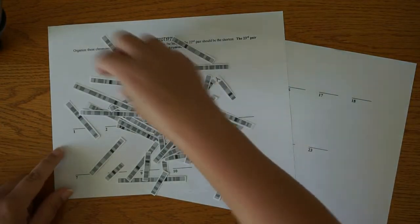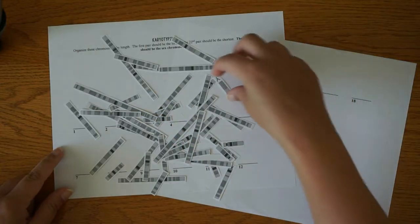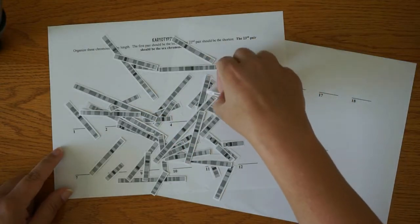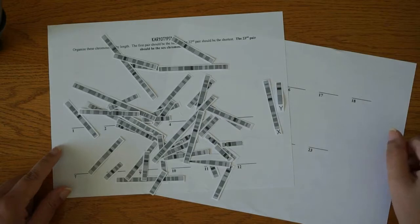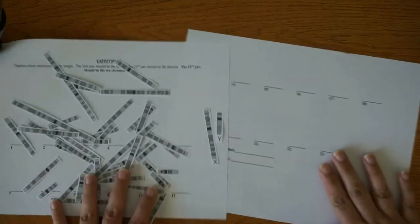Okay, once all of your chromosomes are laid out, you are going to want to find that X and the Y chromosomes. And we are going to separate those out first so they don't get mixed up.